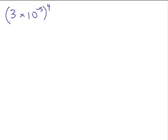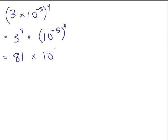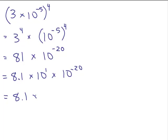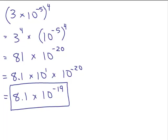Here's another problem: the number is written in scientific notation but it's raised to the 4th power — see if you can do this one on your own. We raise 3 to the 4th power, and raise 10 to the negative 5 to the 4th power. 3 to the 4th: 3 times 3 times 3 times 3 is 81. We multiply the exponents: negative 5 times 4 gives negative 20. But 81 is not scientific notation, so rewrite it as 8.1 times 10 to the 1st. Then 10 to the 1st times 10 to the negative 20, adding exponents gives 10 to the negative 19.